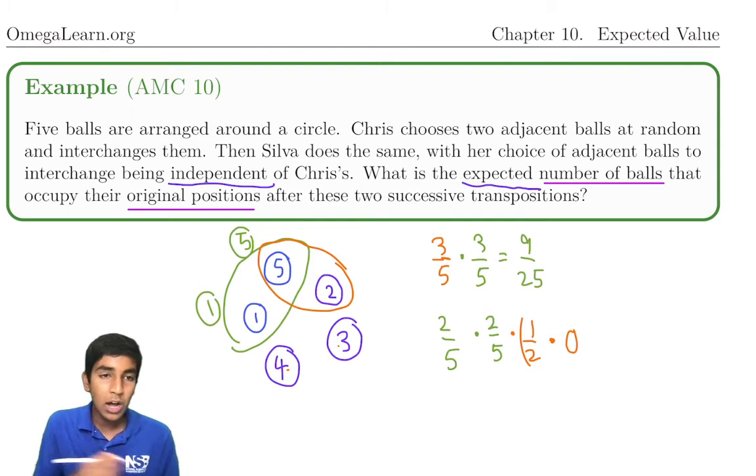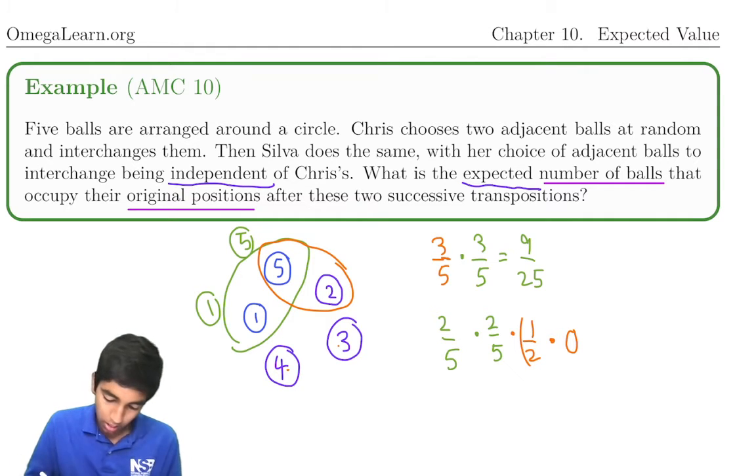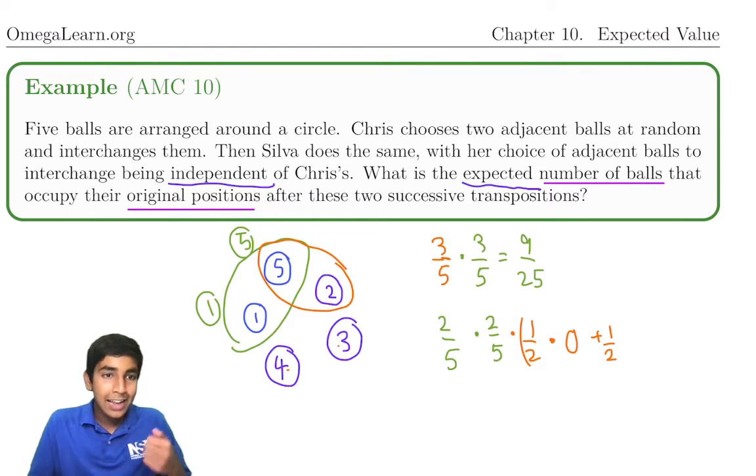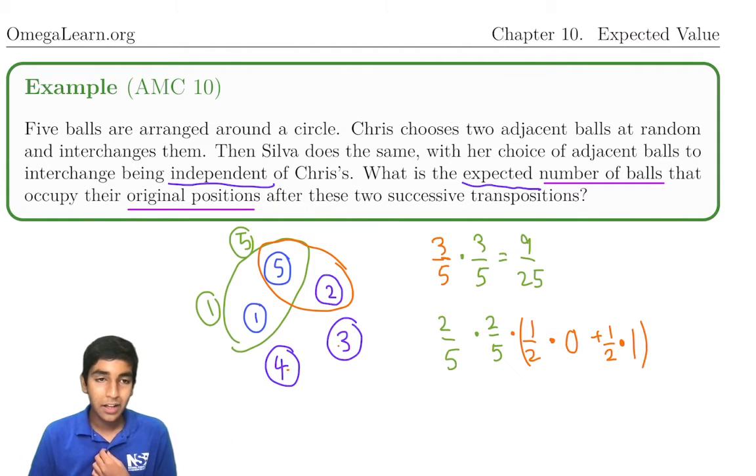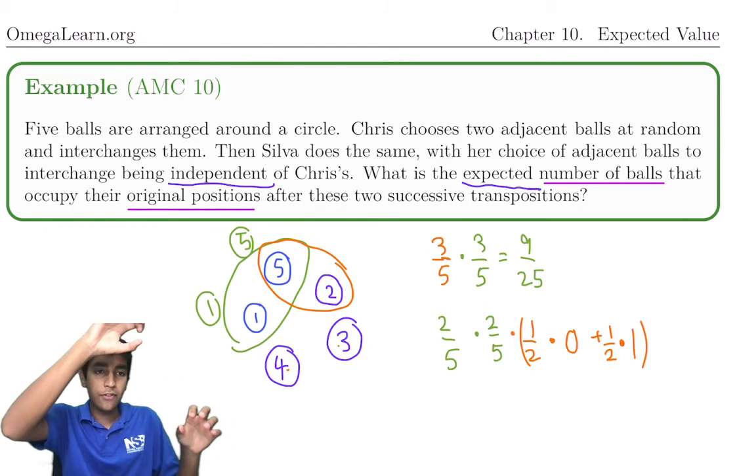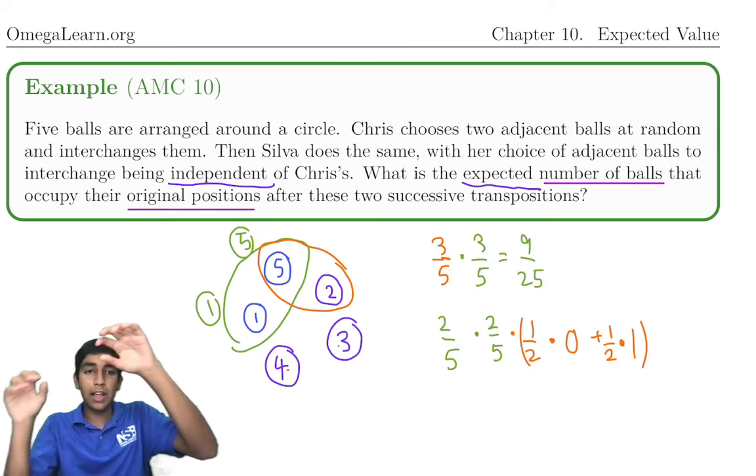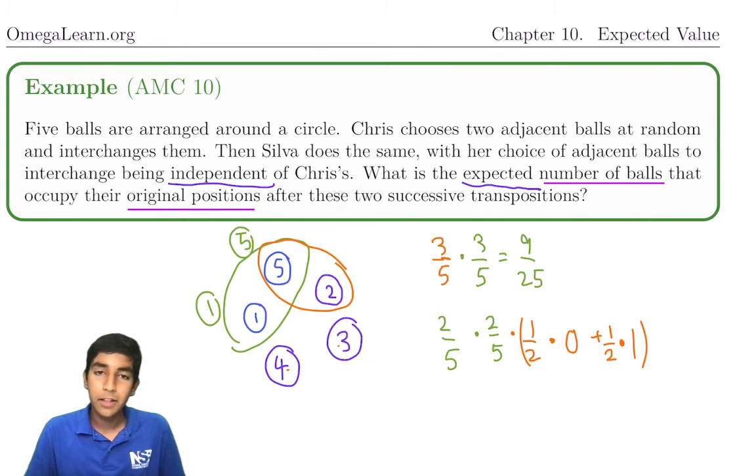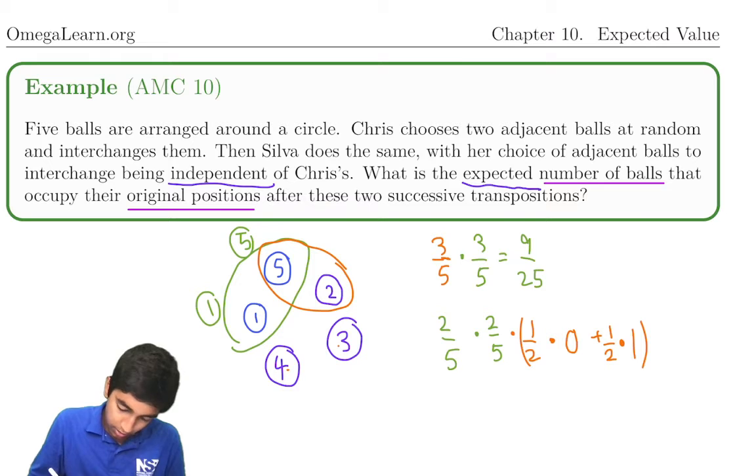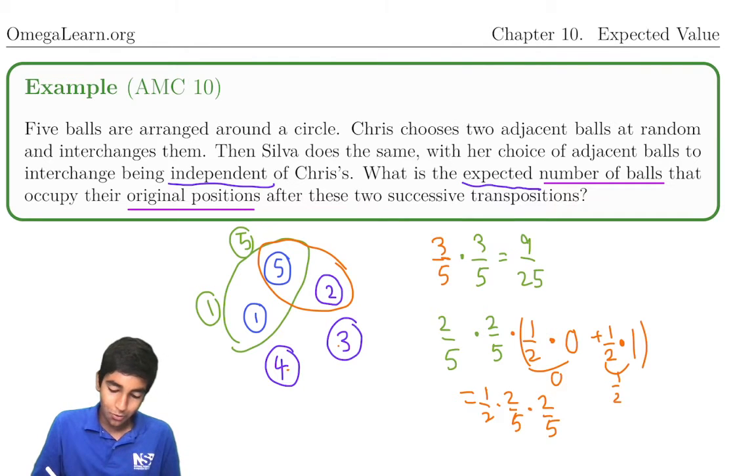Now, what if it gets flipped with one and does go back to its original spot? There's a half chance of that happening as well. In this case, it is in its original position. So times one probability of this case. Now, the reason there's a half probability for each is because it's random. There are equal probabilities of switching five on the left side if it's five and one or the right side, five and two. And now what is this over here? This is zero. This is half. Half times two-fifths times two-fifths equals two over twenty-fifths.